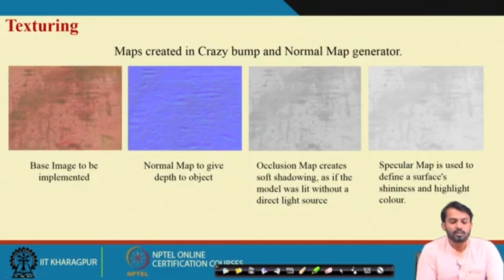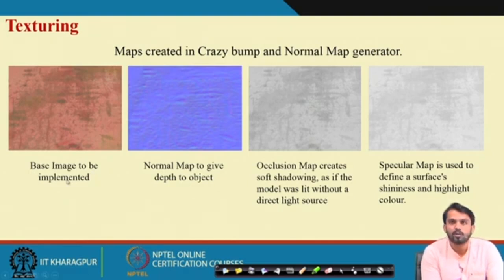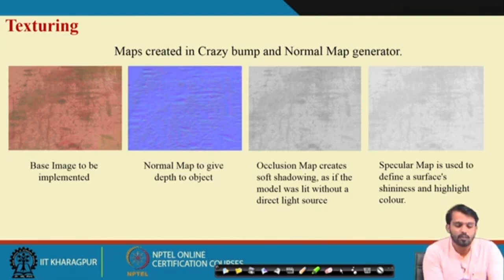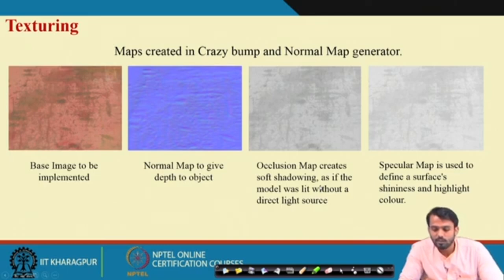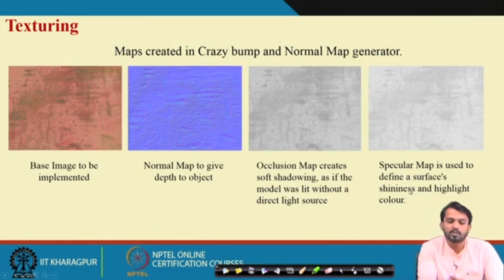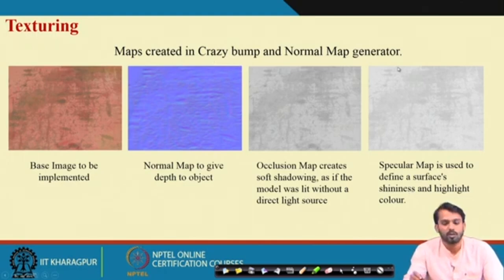For the texturing part, there are four things to look at: first, the base image — take pictures of the component present in the real world environment to implement as the base image. Then the normal map, which gives depth to the object. Then the occlusion map, which creates soft shadowing as if the model was lit without a direct light source. Then the specular map, which gives surface shininess and highlights the color of the component. These maps can be created in CrazyBump or a normal map generator, or directly in Unreal Engine.